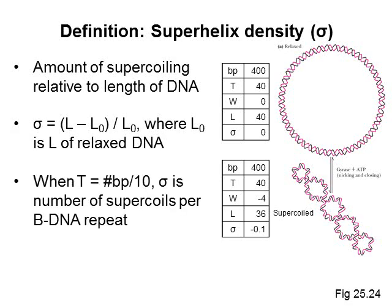So again, if we assume a twist of 10 base pairs per turn, writhe in sigma just turns out to be the number of supercoils per B-DNA repeat. So in this case, for every complete turn of the double helix, we have 0.1 negative supercoils, or one negative supercoil for every 10 turns of the double helix.